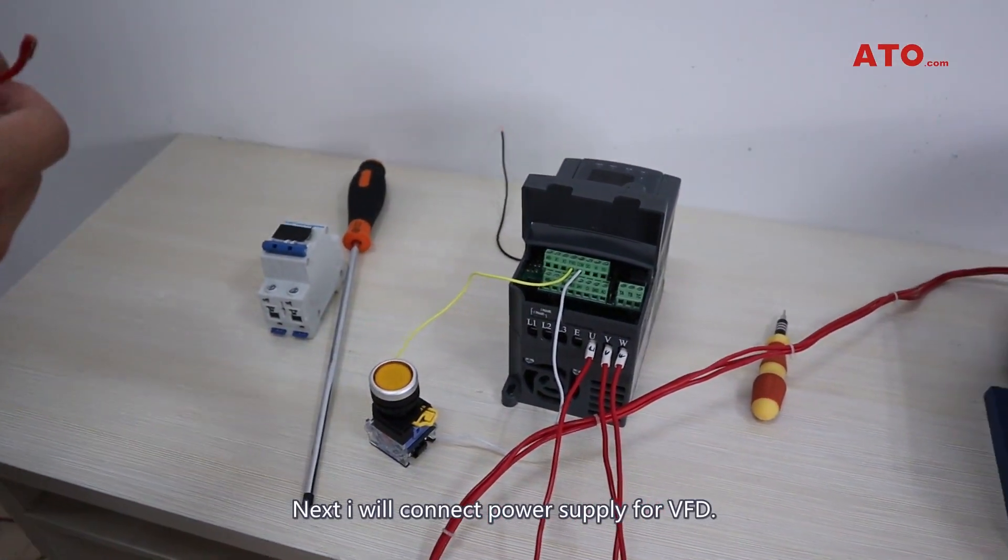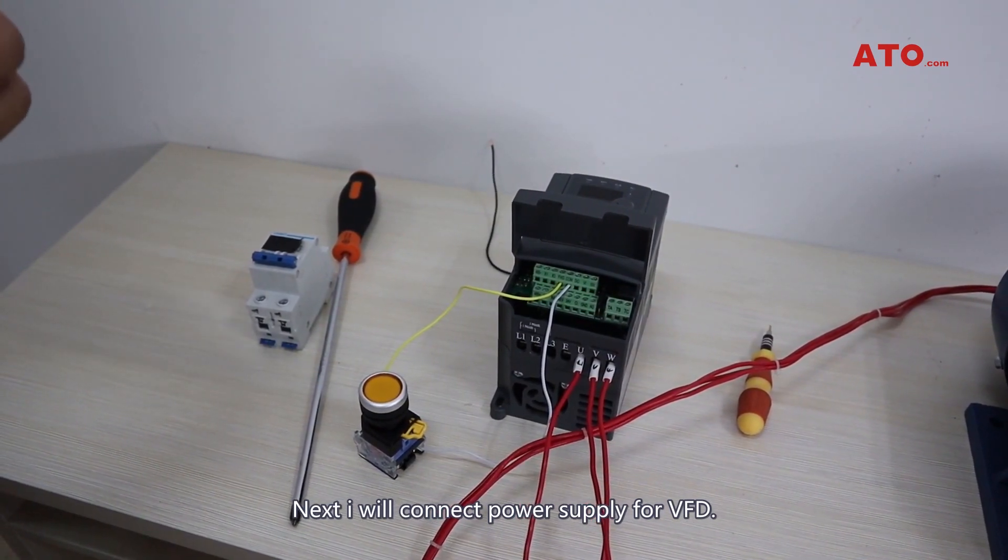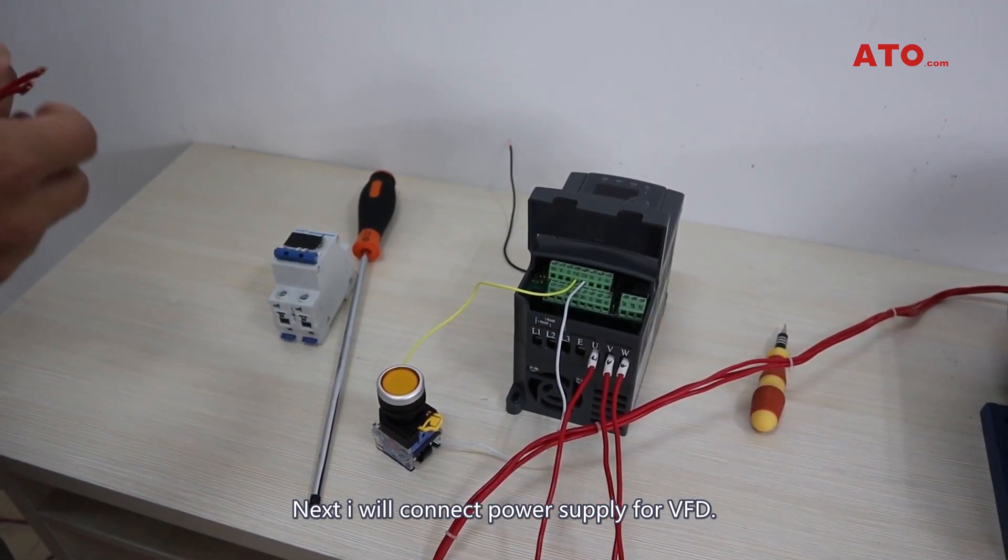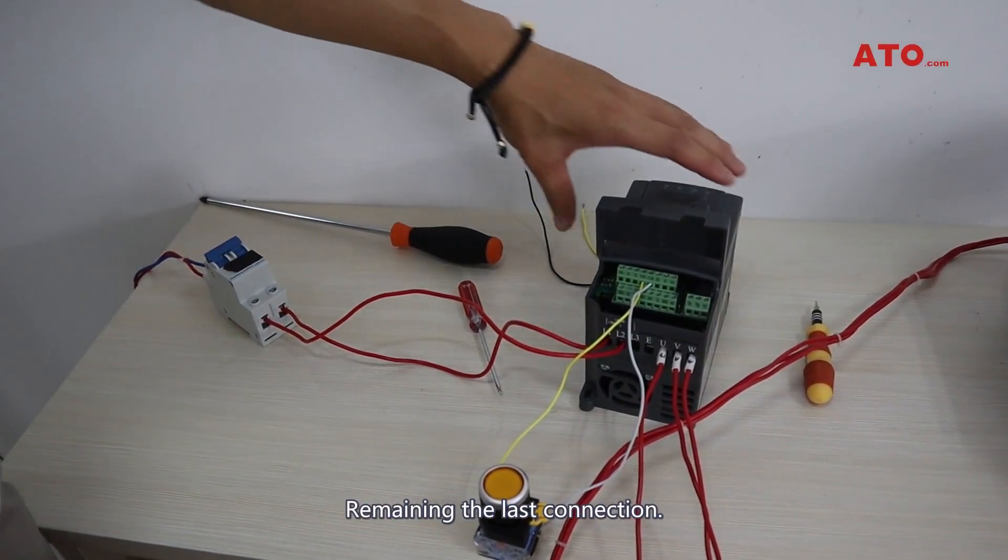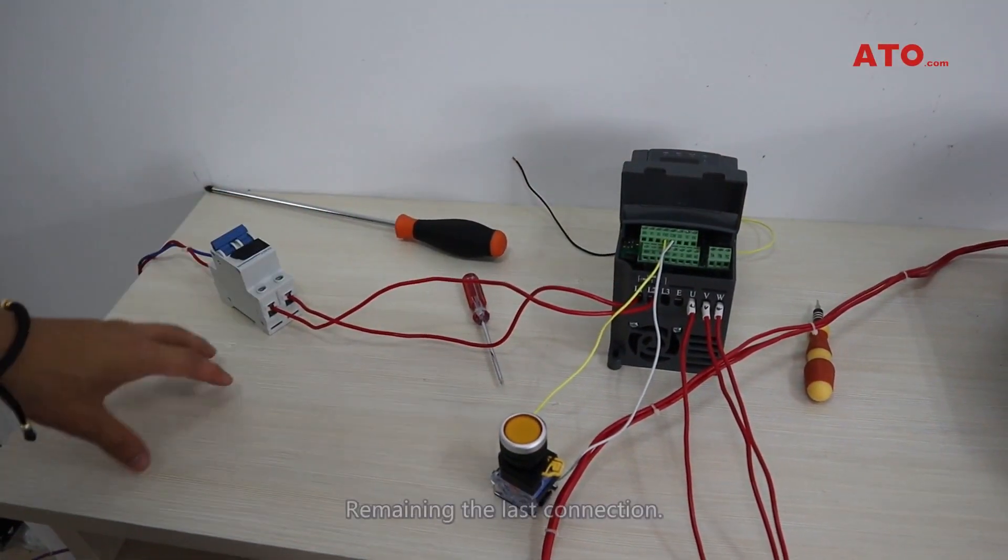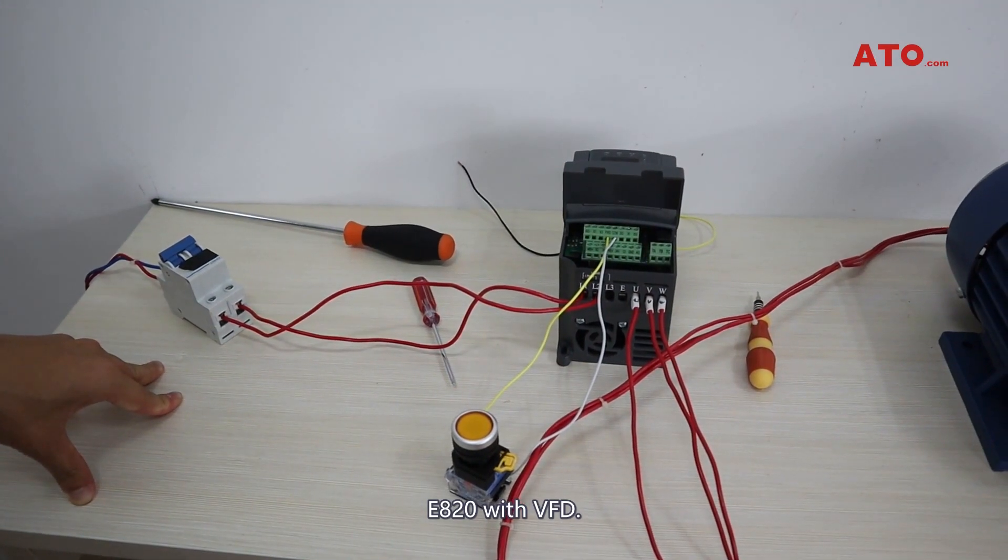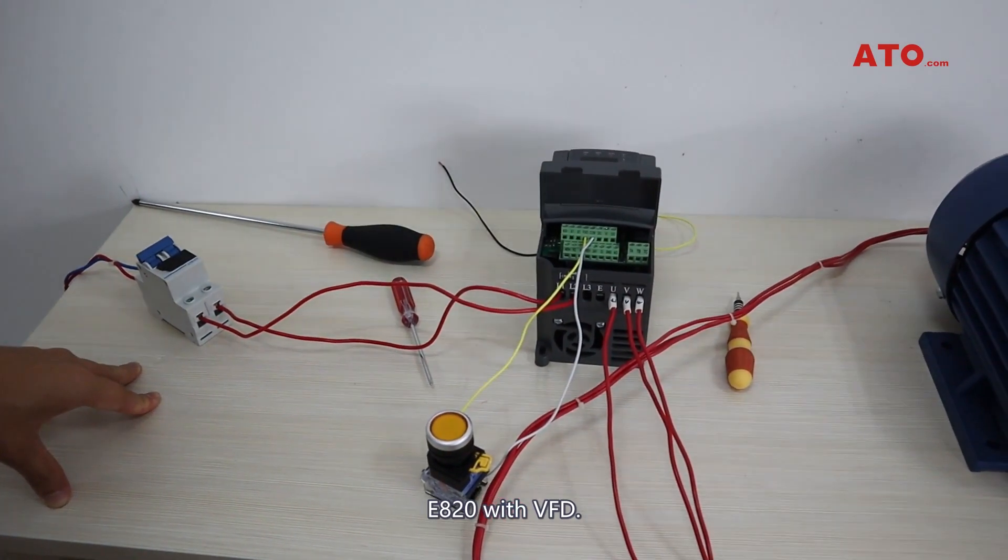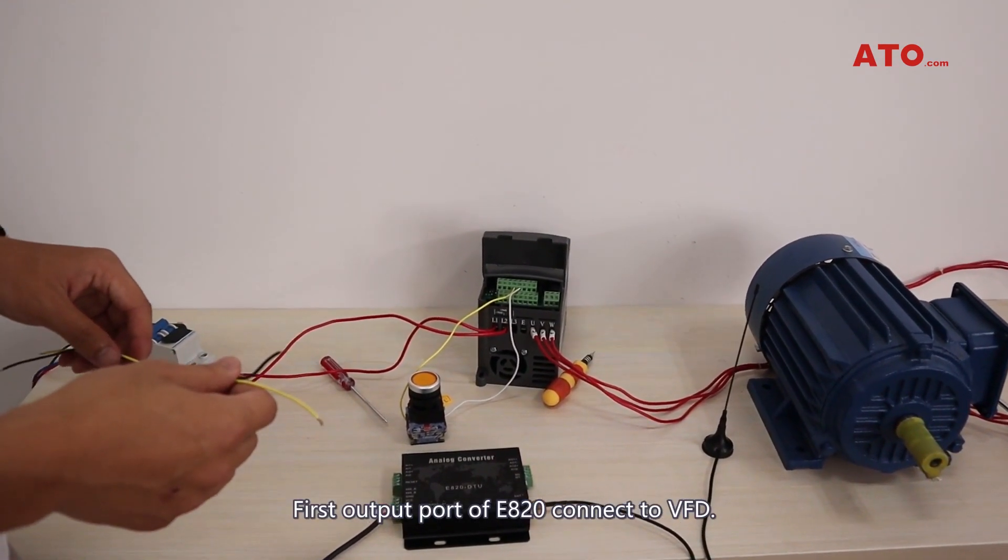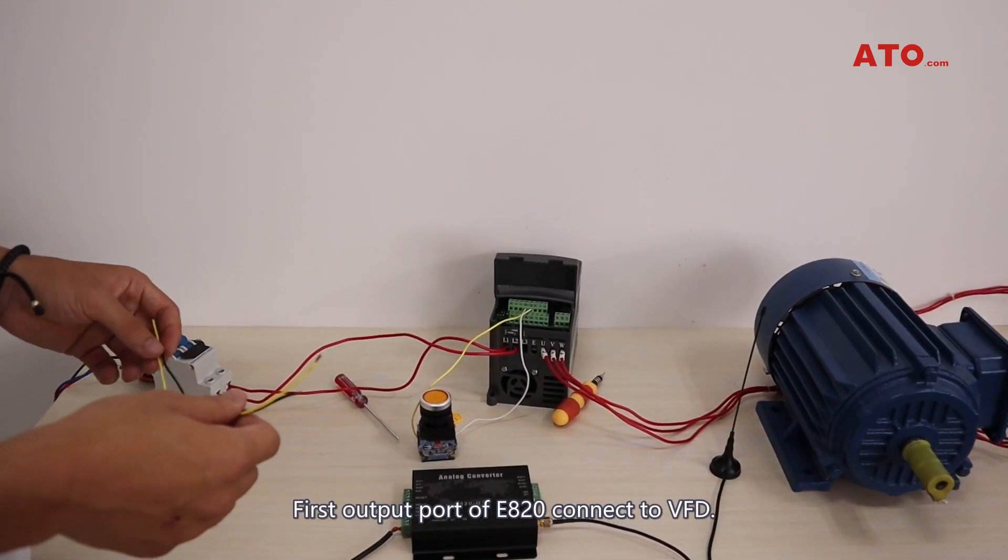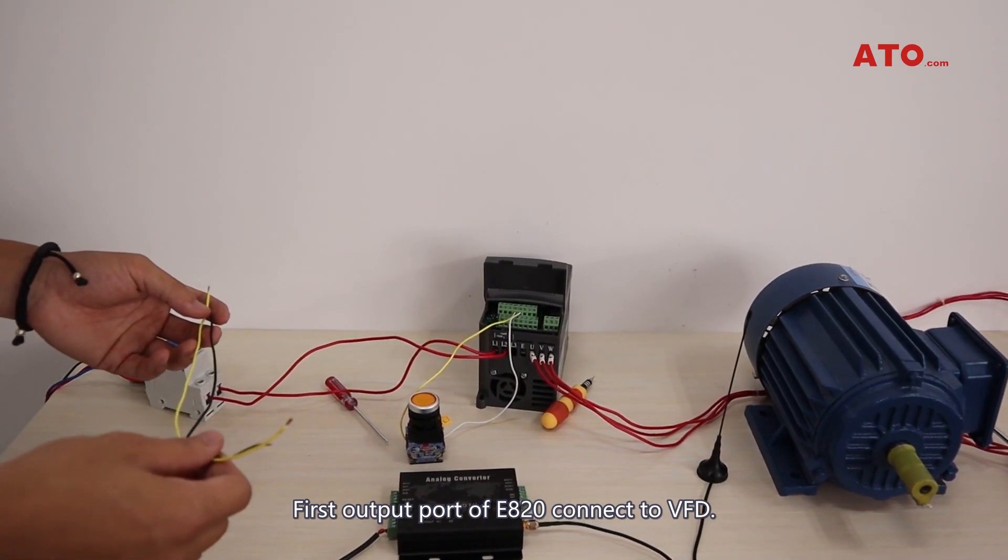Next, I will connect the power cable to VFD. I will use one breaker. Now we remain in the last connection. E820 with VFD. The last one. First output port of E820 connected to VFD.